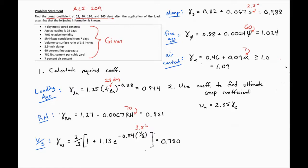Our gamma creep is a combination of all the factors above. So we take 0.844 times 0.801 times 0.780 times 0.988 times 1.024 times 1.09 to find our gamma here.